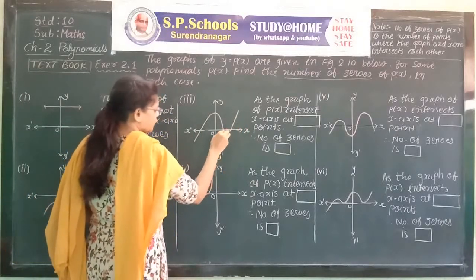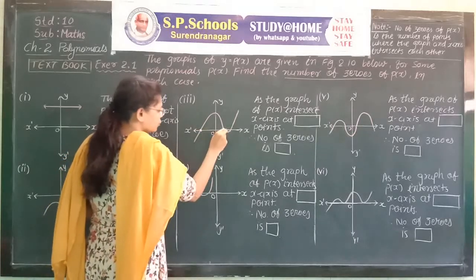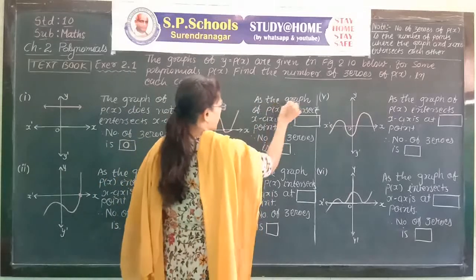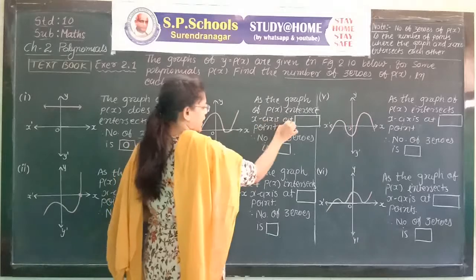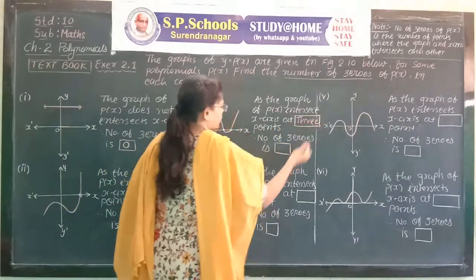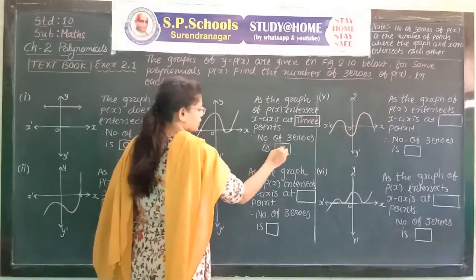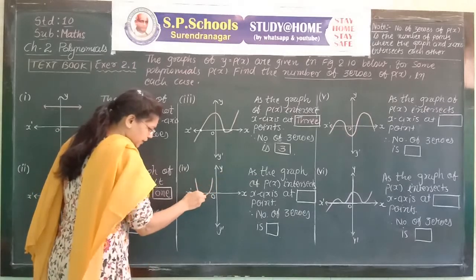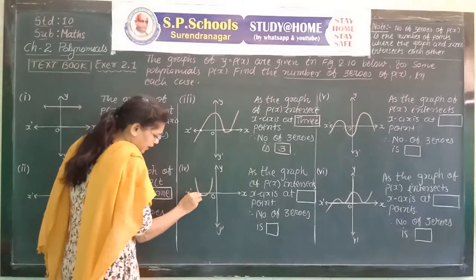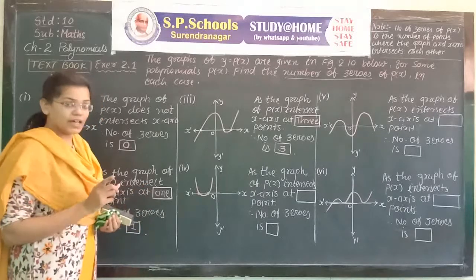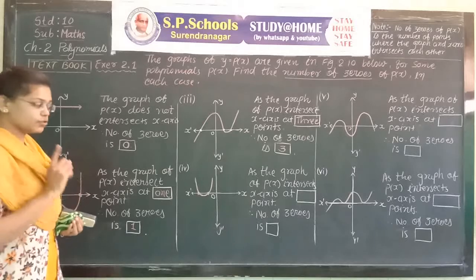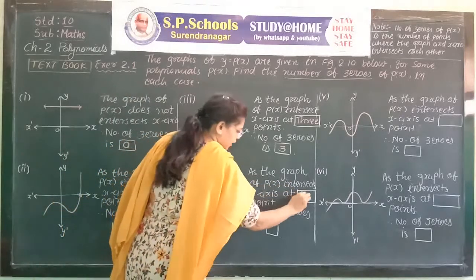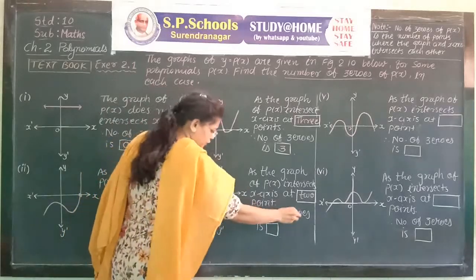Third figure: the x-axis and graph intersect each other at one, two, and three points. That's why this polynomial contains three zeros. As the graph of P(x) intersects the x-axis at three points, therefore the number of zeros is three. Fourth figure: the graph represents a quadratic polynomial intersecting the x-axis at two distinct points. Therefore the number of zeros are two.